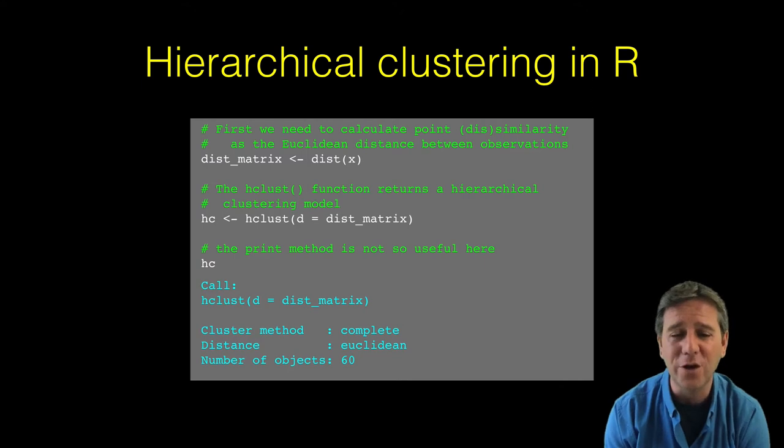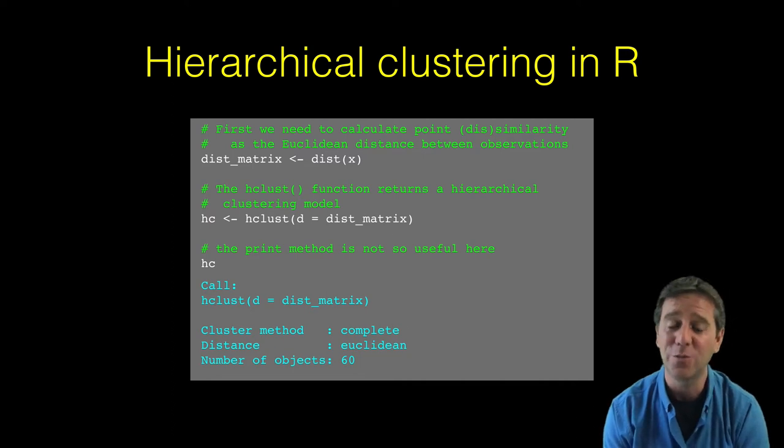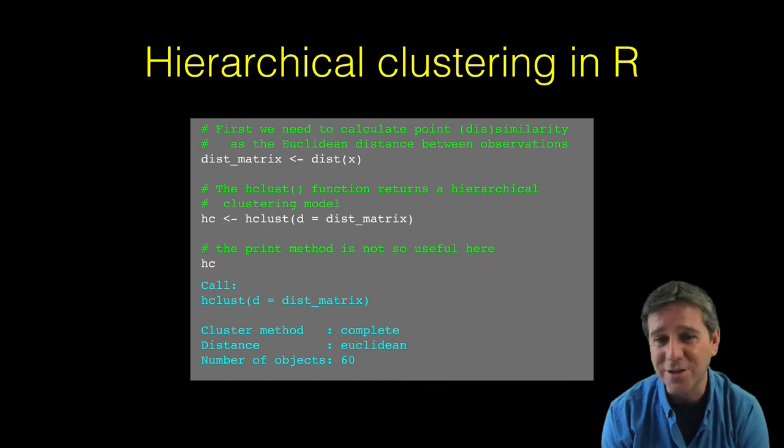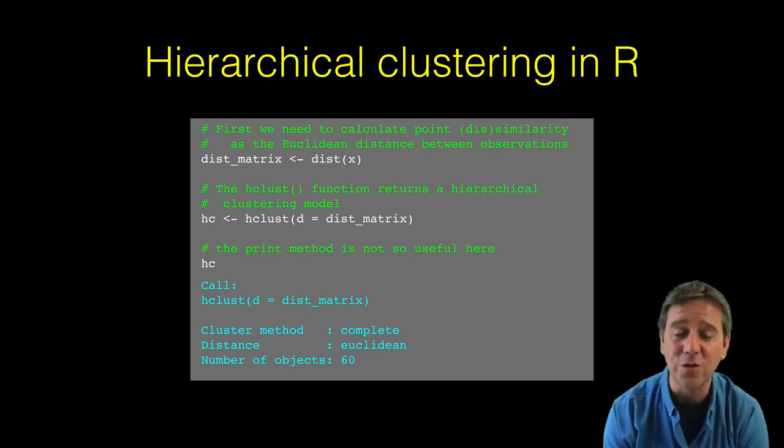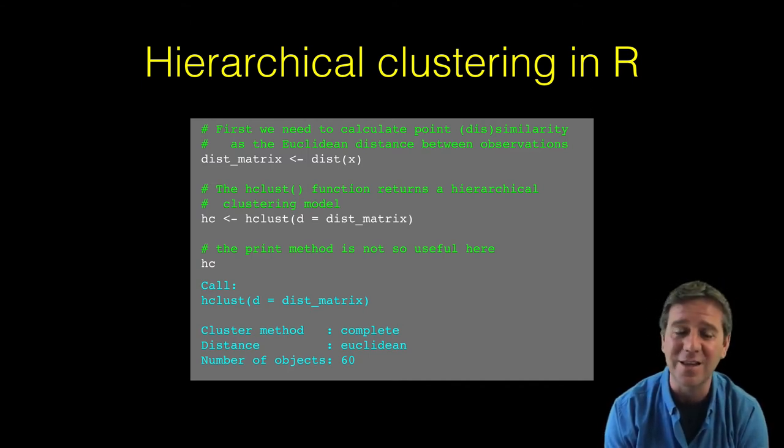Unfortunately, the print method for hclust is not as useful as the one for k-means. With k-means, printing the result tells you lots of useful information like cluster membership and centroids. But with hclust, it basically just prints out details of how the calculation was set up - that you had 60 points, using Euclidean distance, etc. Not a very useful print method.